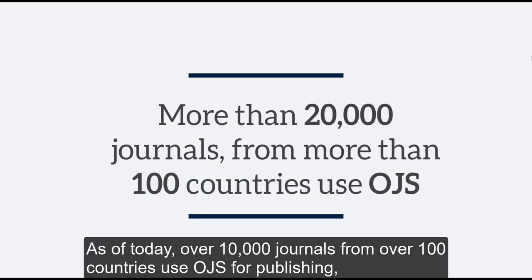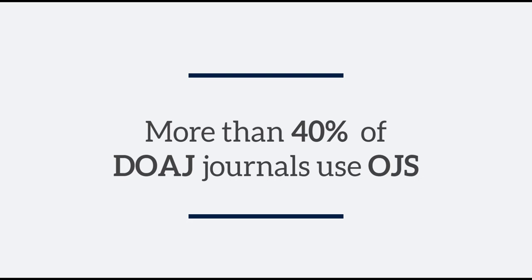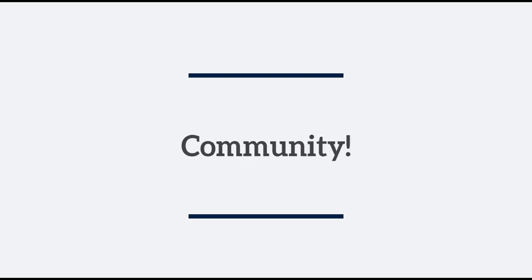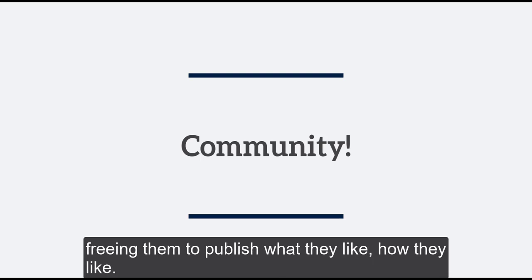As of today, over 20,000 journals from over 100 countries use OJS for publishing, and over 40% of the journals in the Directory of Open Access Journals use OJS. One of the amazing things about OJS is that it gives local communities control over their publishing infrastructure, freeing them to publish what they like, how they like.